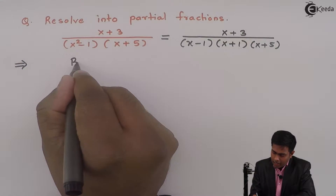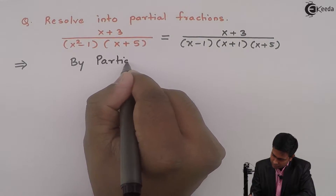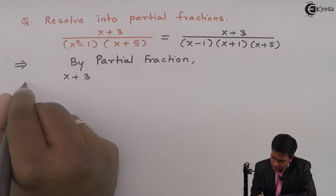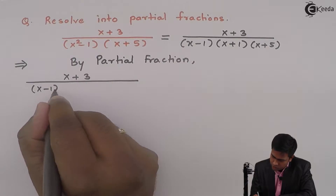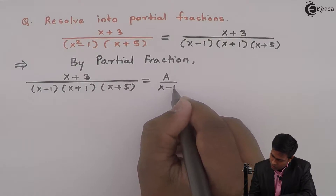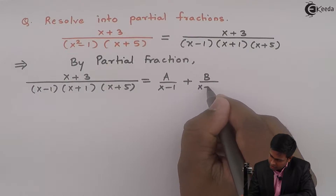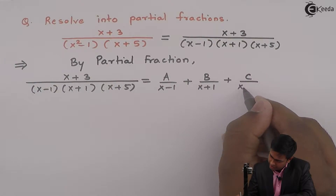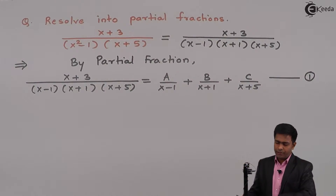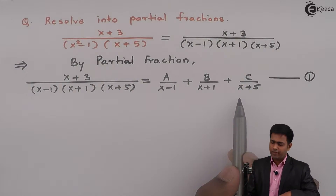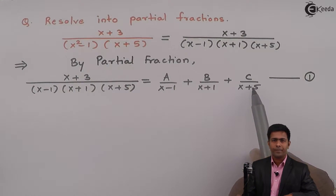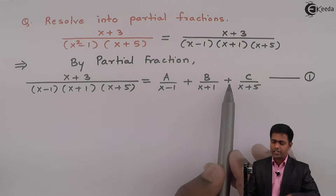By partial fractions, we write x plus 3 upon (x minus 1)(x plus 1)(x plus 5) as A upon (x minus 1) plus B upon (x plus 1) plus C upon (x plus 5). We will call this equation number 1. We will solve equation 1 to get the values of A, B, and C, then substitute them back to get the partial fraction.